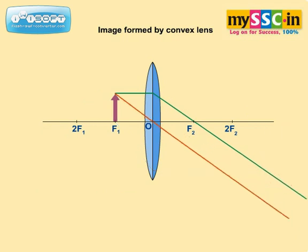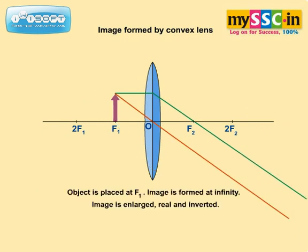When the object is placed at F1, the image is formed at infinity. The image is enlarged, real, and inverted.